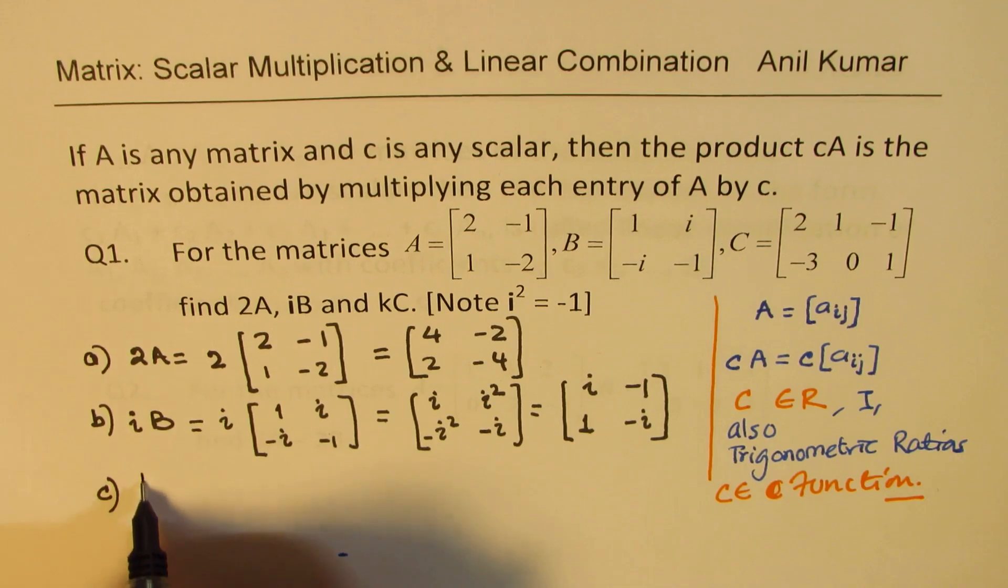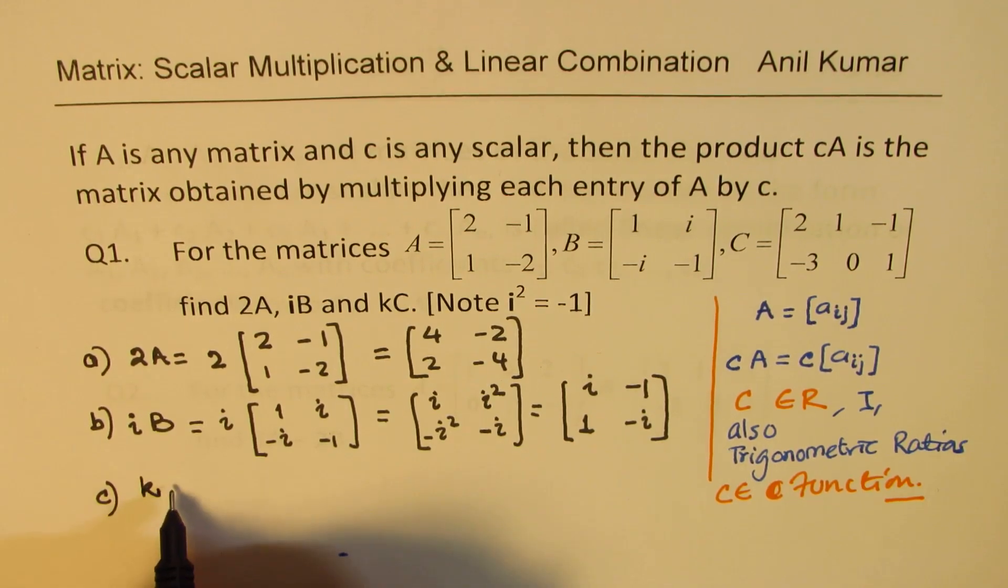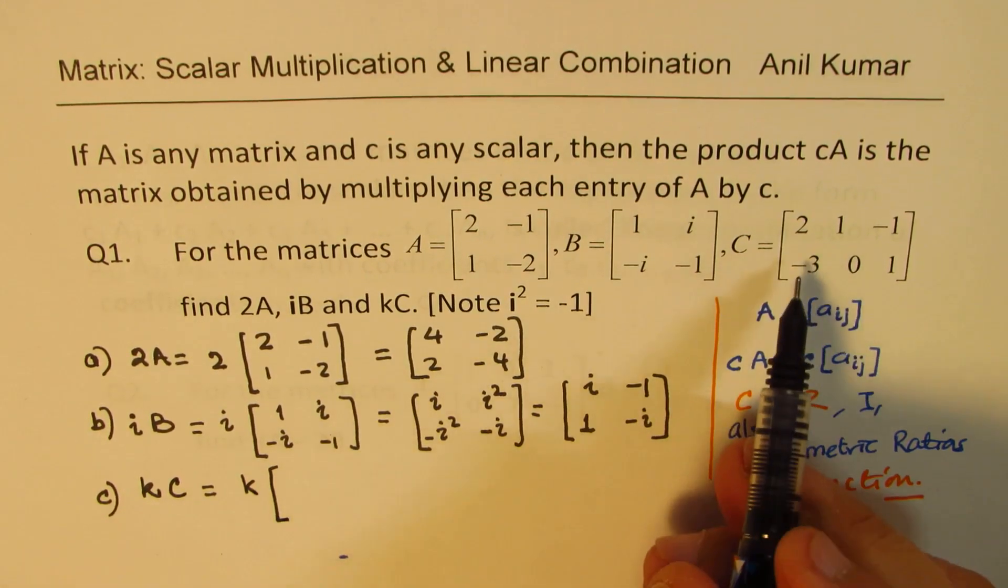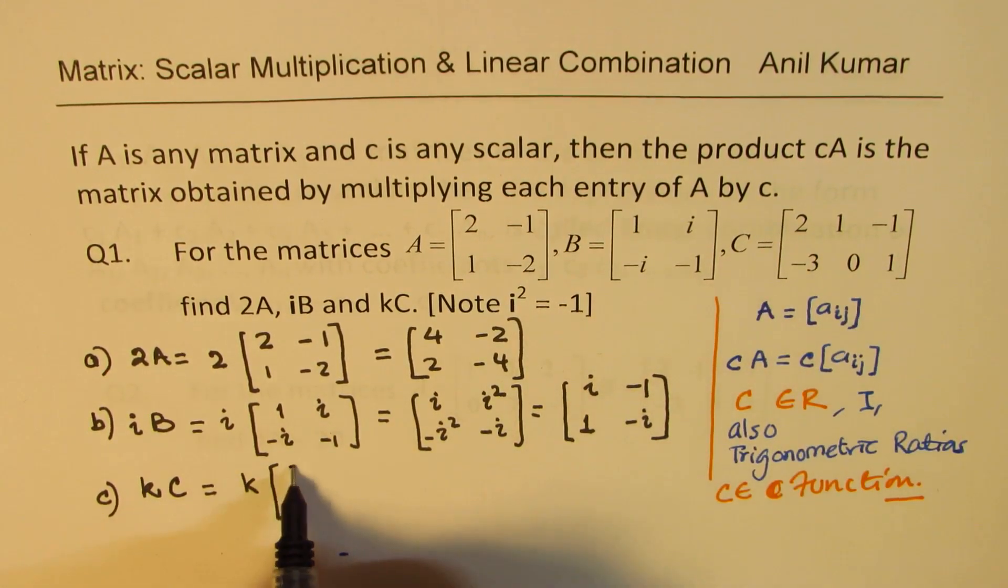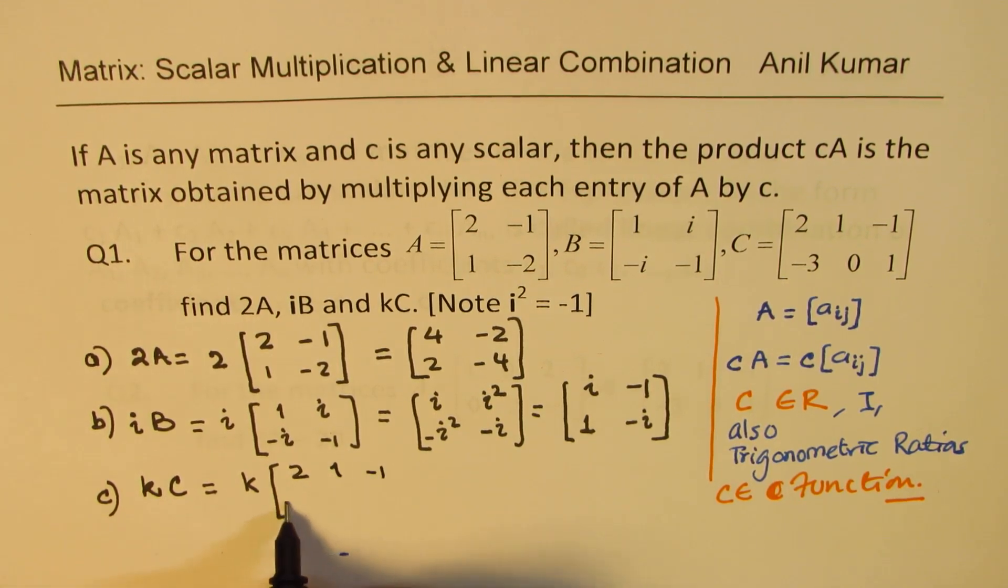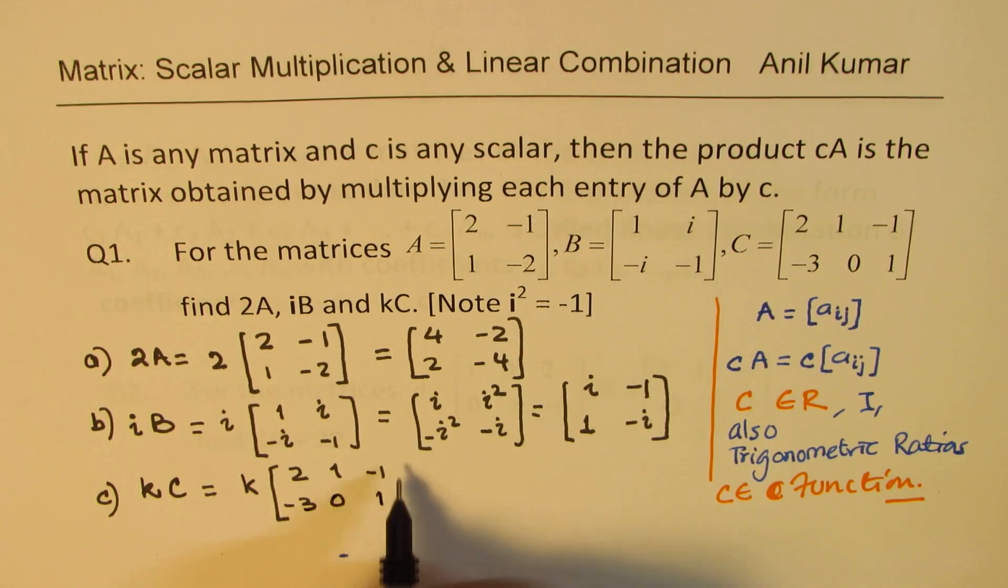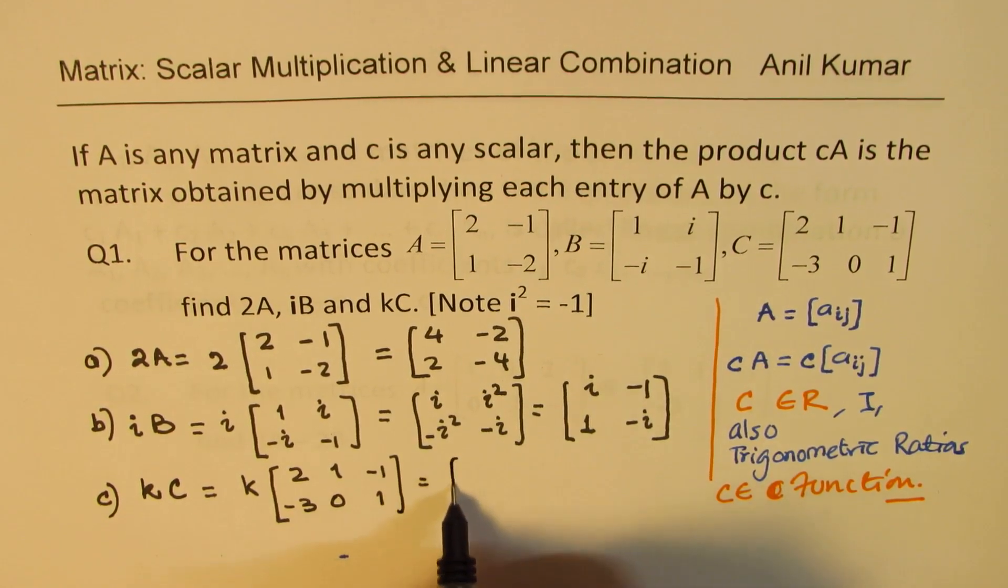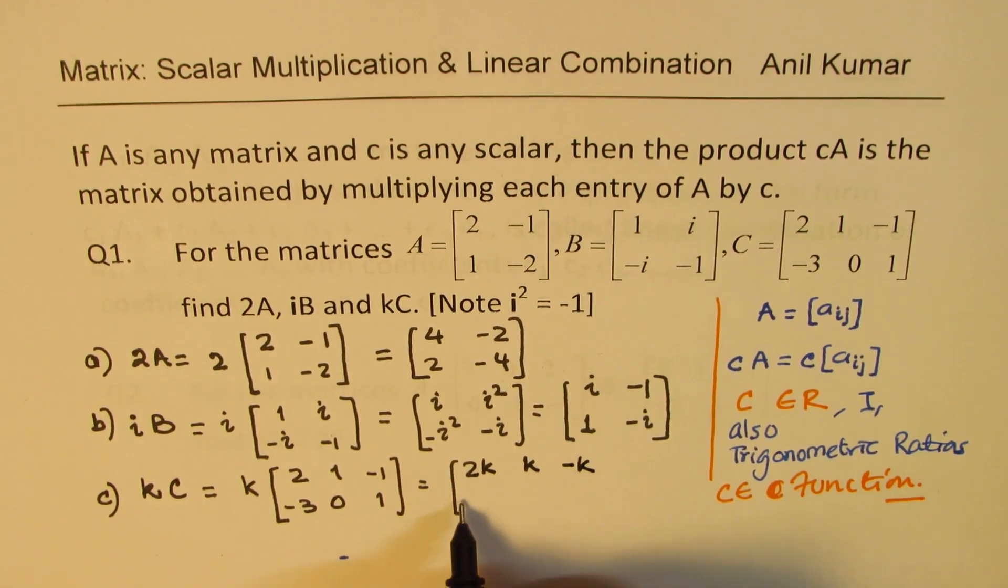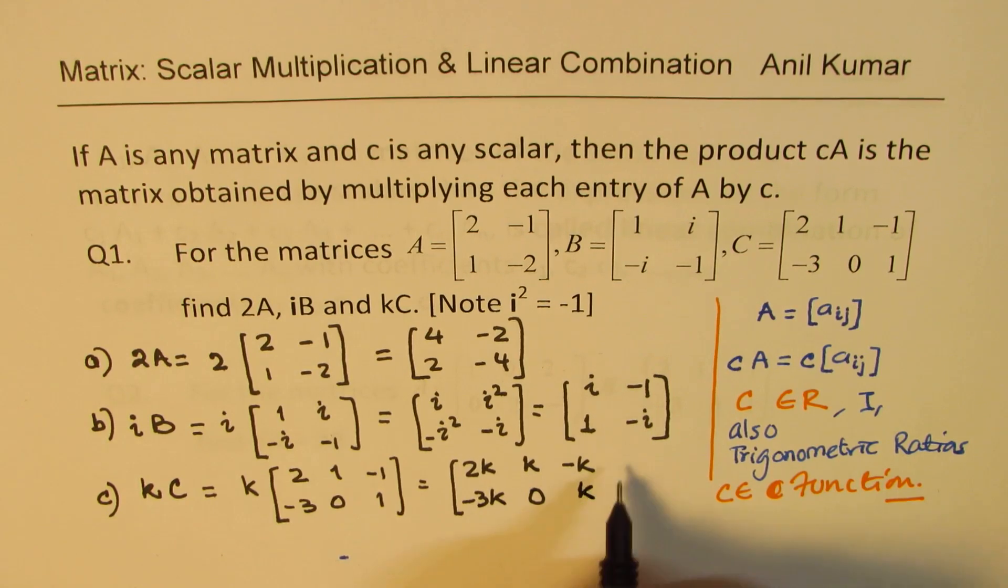Next one is general. So any constant k times C, that is what we are saying. So we'll just multiply each and every element, this time we have a two by three matrix. Two rows, three columns.